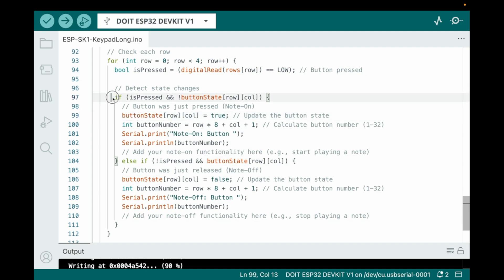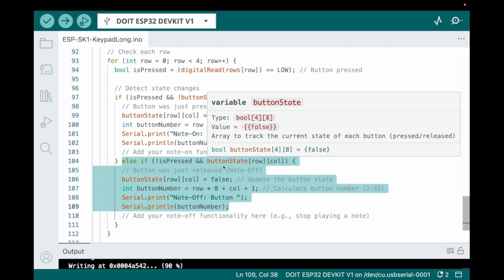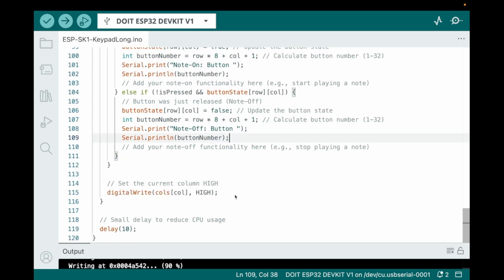If the button is being pressed for the first time, then what we're saying here is we're figuring out with this mathematical equation here, we're figuring out which button is being pressed, and we're numbering them 1 to 32. And if that button is being pressed for the first time, we're saying the note is on. And if it was previously pressed, and now it's released, then we're saying the note is off. And then finally, after checking each column, we set them high again and move on to the next one. So it just continuously loops over and over and over again.